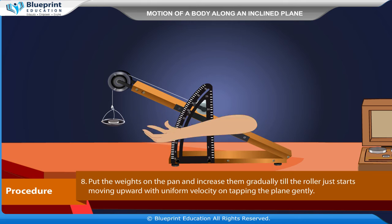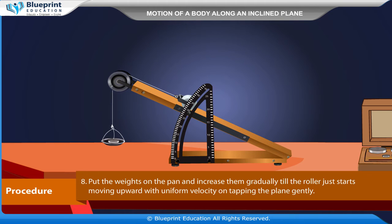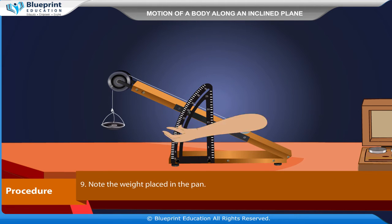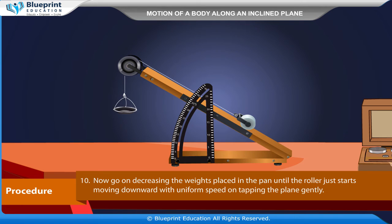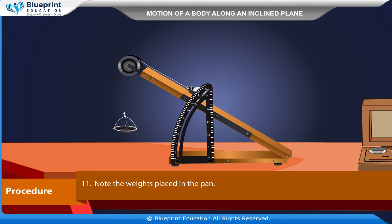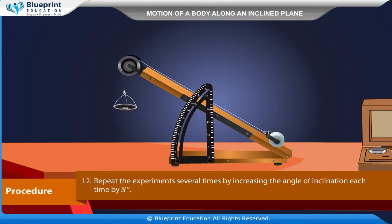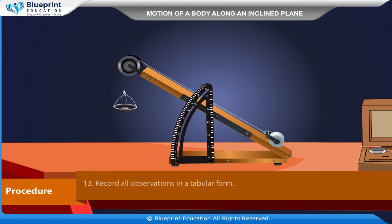Put weights on the pan and increase them gradually until the roller just starts moving upward with uniform velocity on gently tapping the plane. Note the weight placed in the pan. Then decrease the weights until the roller just starts moving down with uniform speed on gently tapping the plane, and note the weights. Repeat the experiment several times by increasing the angle of inclination each time by 5 degrees. Record all observations in tabular form.